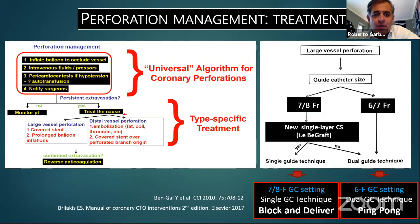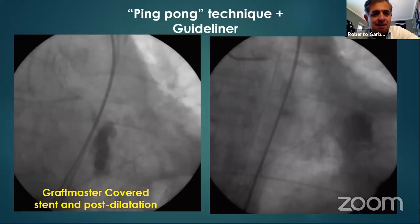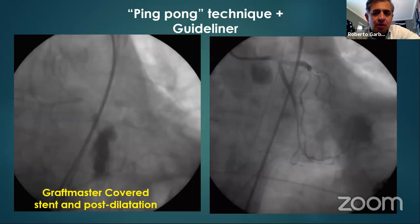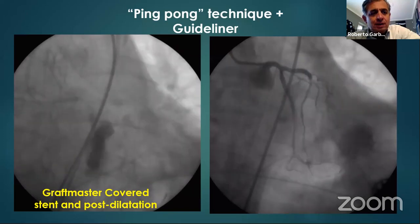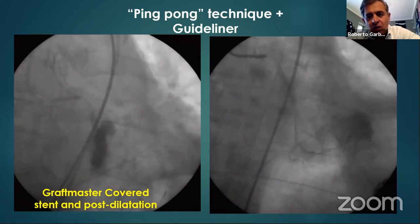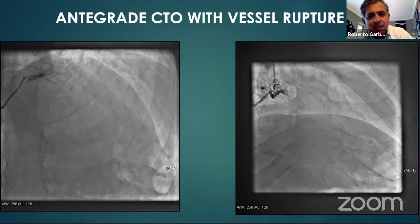The treatment algorithm for large vessel perforation depends on guiding catheter size. Working with a 7 or 8 French guiding catheter during CTO — not 6 French — gives two strategy options: single guiding catheter technique or dual ping-pong technique to place a covered stent. The first step is to close the perforation with a balloon, then use a ping-pong technique plus GuideLiner to deliver the covered stent.